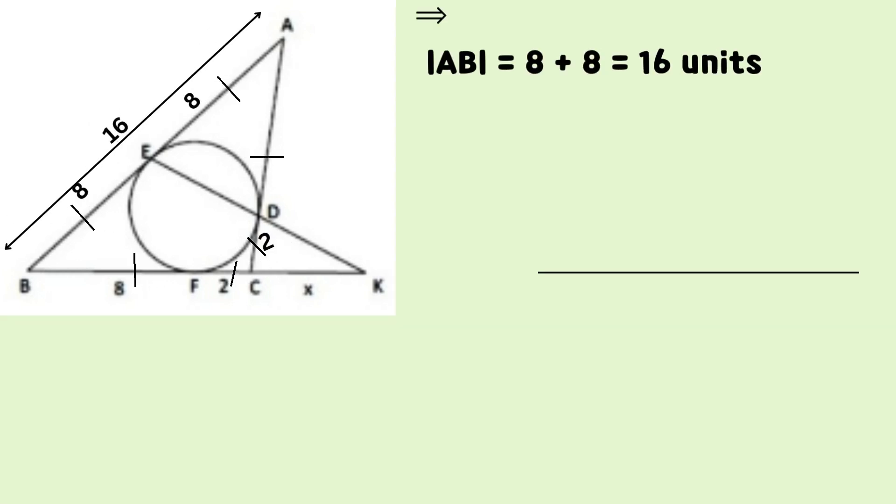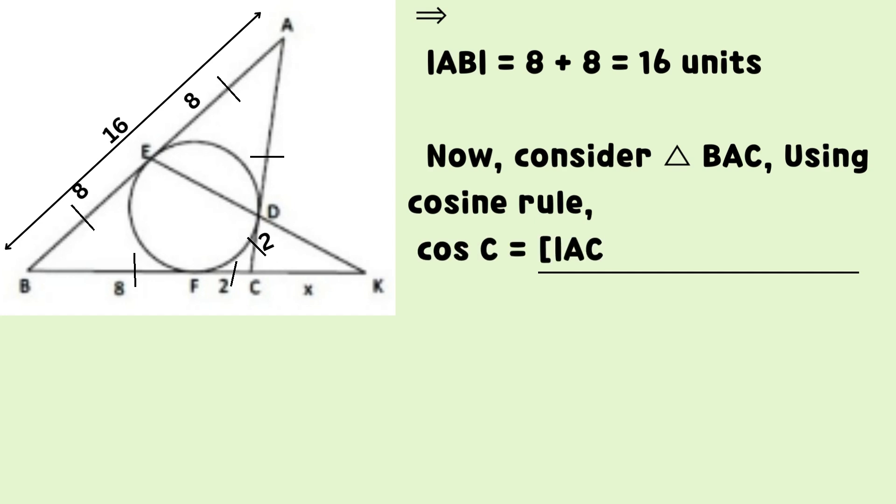AB equals 8 plus 8 is equal to 16 units. Now, consider triangle BAC. Using cosine rule.